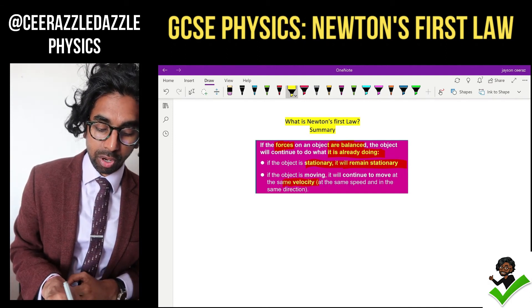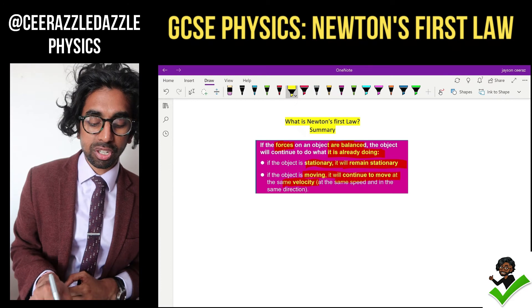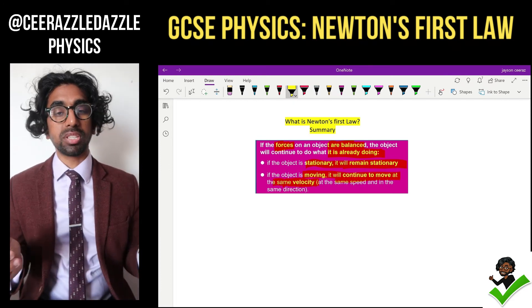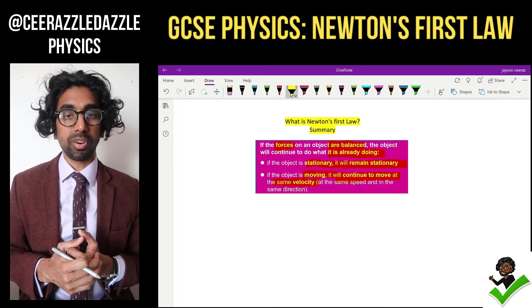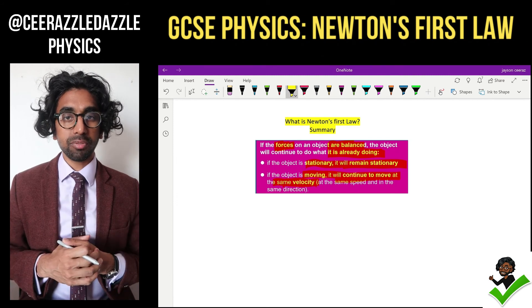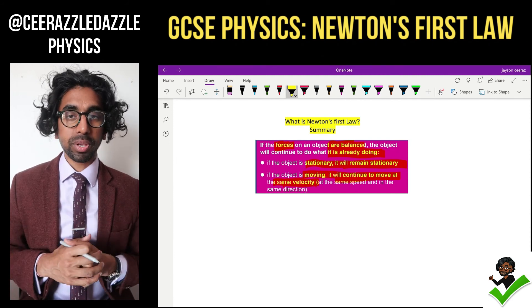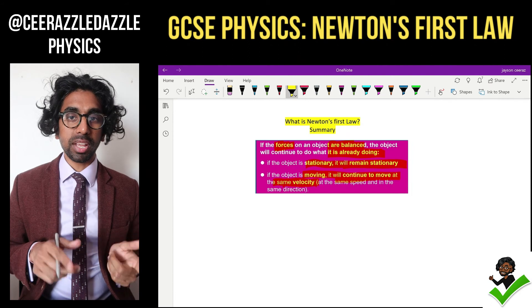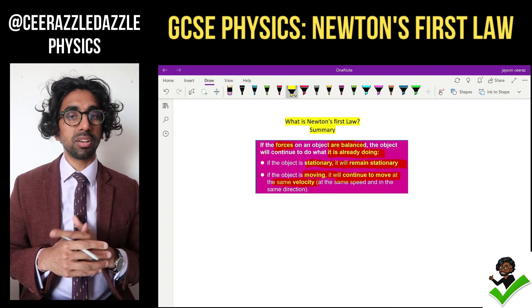When the object is already moving, it will continue to move at the same velocity, which is the same speed in the same direction. Very simple lesson for Newton's first law. Make sure we get our head around it because we need it for the next lesson when we're tackling Newton's second law of motion.